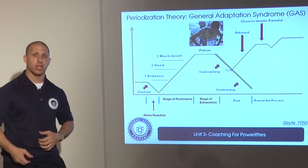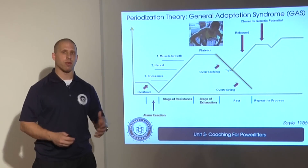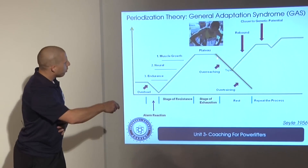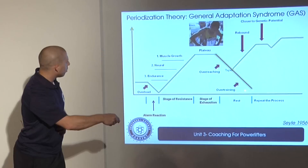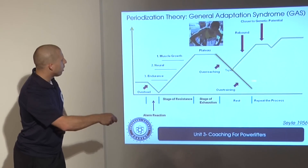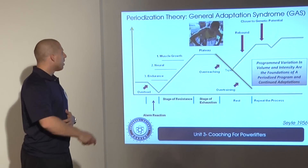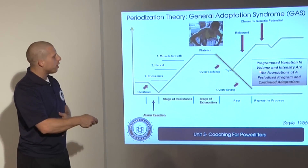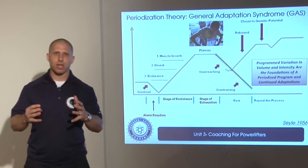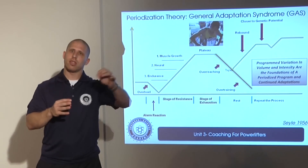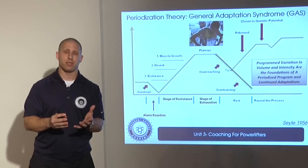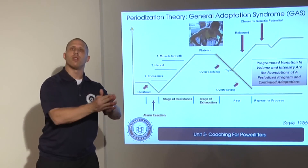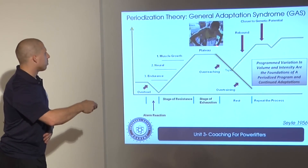However, if we go past overreaching and don't taper soon enough, we could overtrain. A lot of us have gotten greedy and we don't quite know when to taper. If we overtrain, we can see we're back down below our baseline levels of strength. So what this shows us is that programmed variation in volume and intensity — the foundations of a periodized program — are necessary to continue to progress over time. What was necessary to progress before? Progressive overload. Periodizing is going to allow you to appropriately progressive overload over time so you can break out of this plateau.